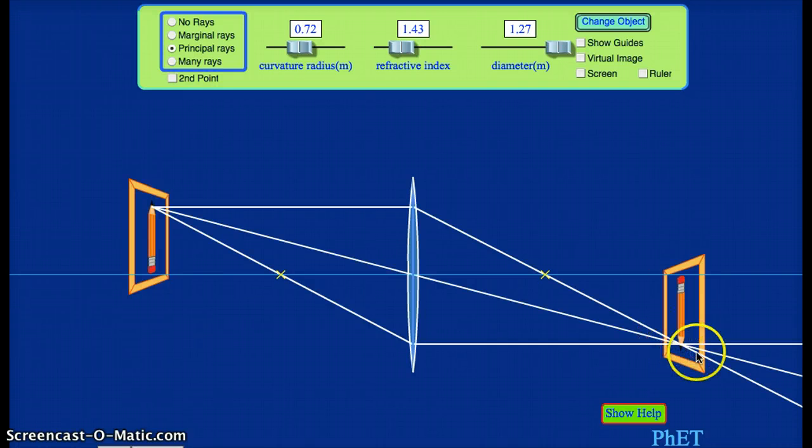And you'll notice that all three of these rays converge at a point, and that point becomes the tip of our image. So by drawing these three rays and finding where they converge, where the three rays pass through each other, this is how we can locate the position of our image.